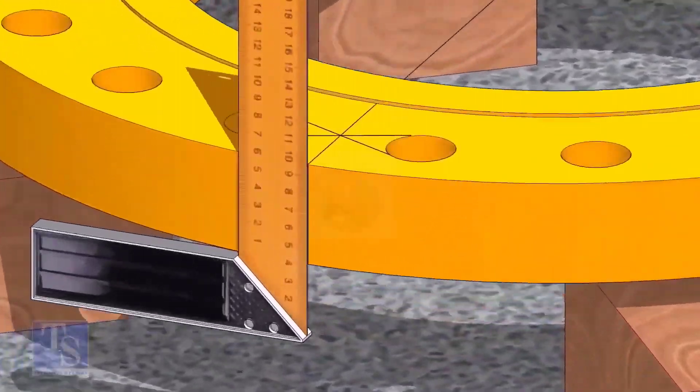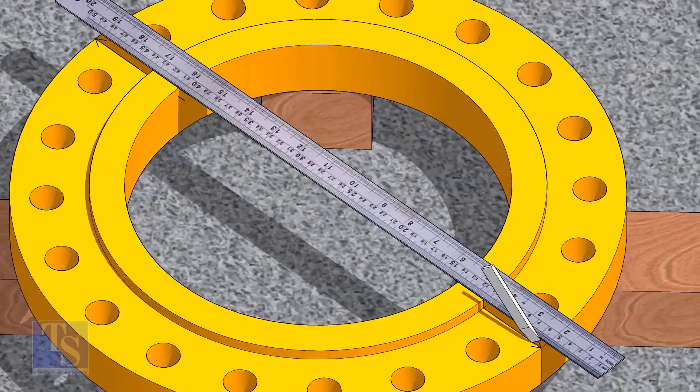Now, transfer the center line to the sides of the flange. Overturn the flange and transfer the center line on the back side of the flange.